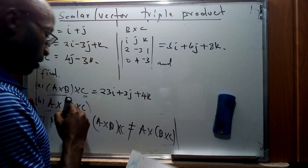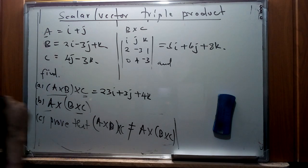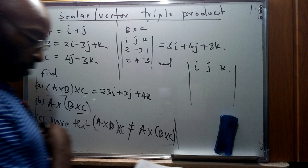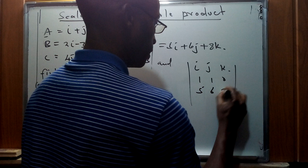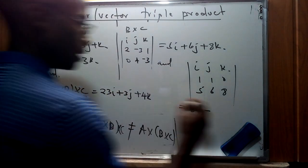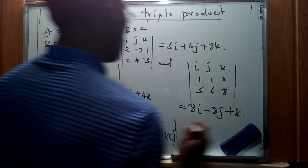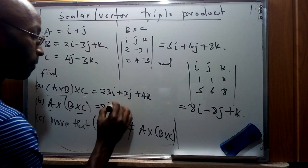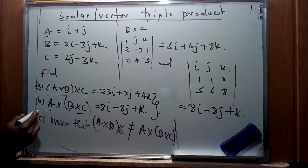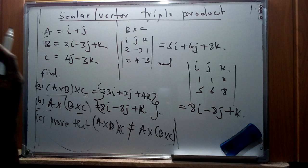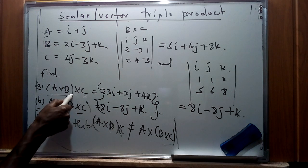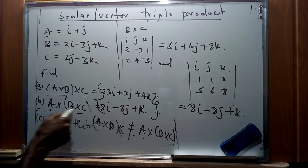Now we cross a with (b × c). With a = (1, 1, 0) and b × c = (5, 6, 8), we set up the i, j, k determinant with rows (1, 1, 0) and (5, 6, 8). This gives: 8i − 8j + k. So a × (b × c) = 8i − 8j + k. Comparing the two results — (a × b) × c = 23i + 3j + 4k and a × (b × c) = 8i − 8j + k — they are clearly not equal.